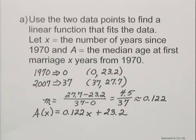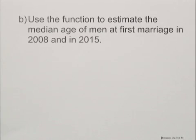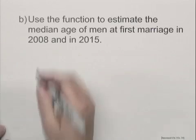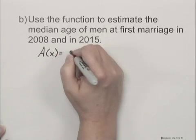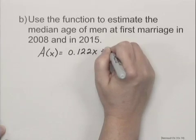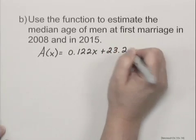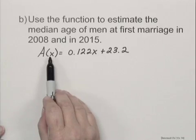Now there's another part to this question. We are asked to use the function to estimate the median age of men at first marriage in two years, 2008 and 2015. So let's first of all write the function we found, A(x) = 0.122x + 23.2.